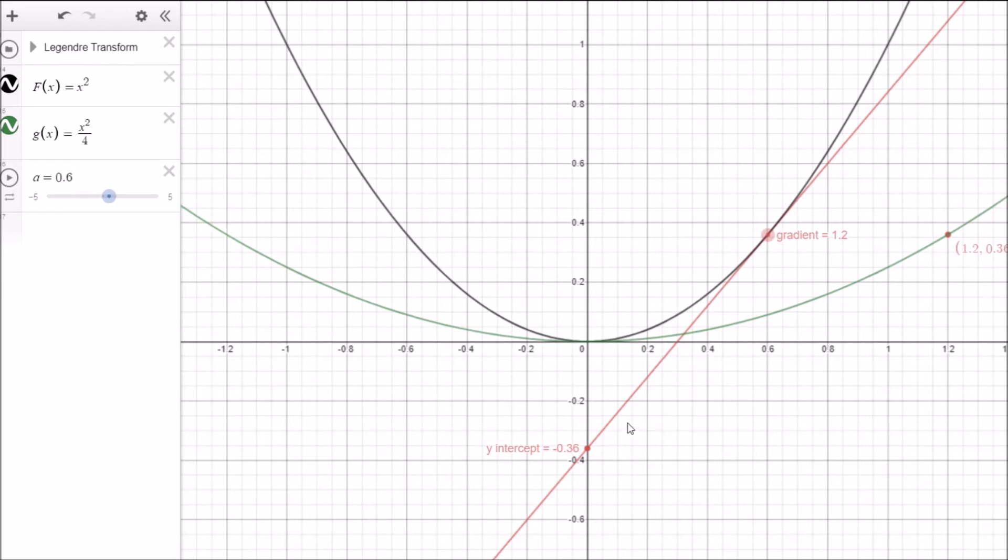So you can see here in this instance, we've got this 1.2, and it's 0.36. So if I just shift it along, you can see all the different values here. In this case here, we've got 0.6. That's the 0.6, which is the gradient. And we've got the y-intercept. The y-intercept is 0.09. So this gives us a simple little graphical method of comparing the original function to the function that has been gone through the Legendre transform.